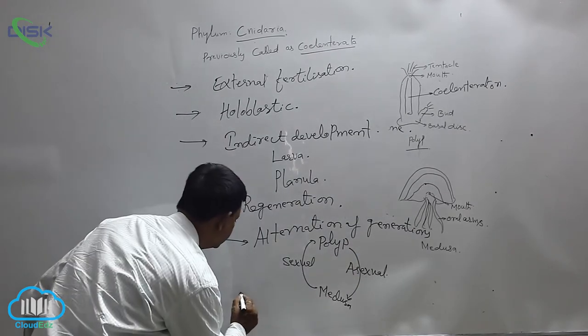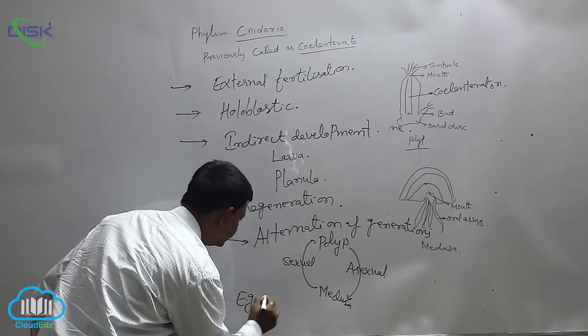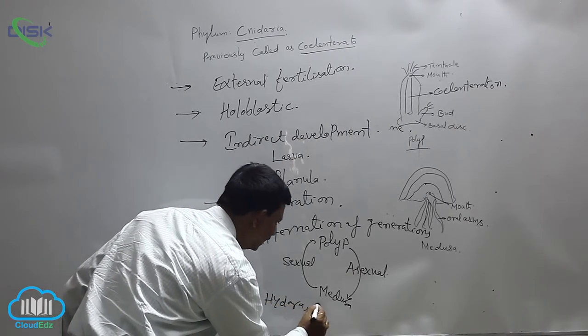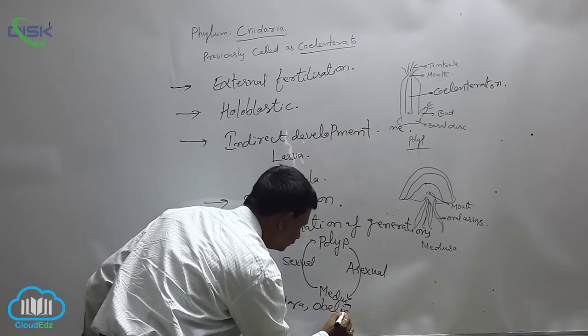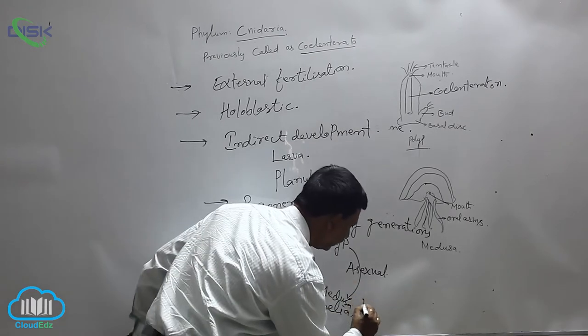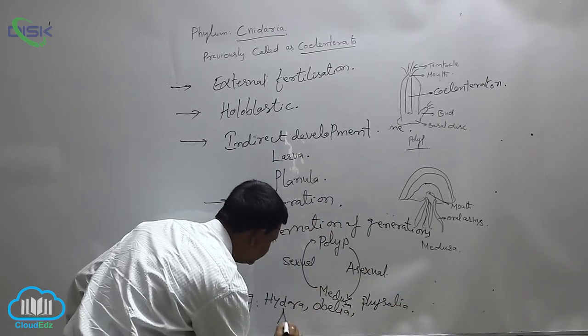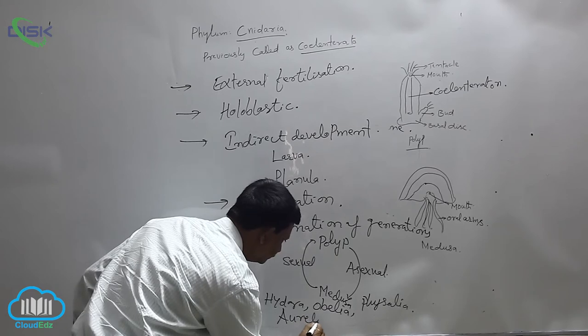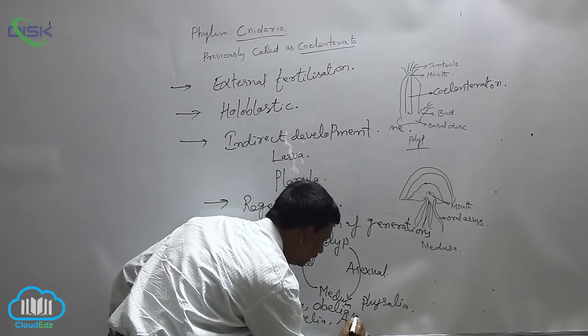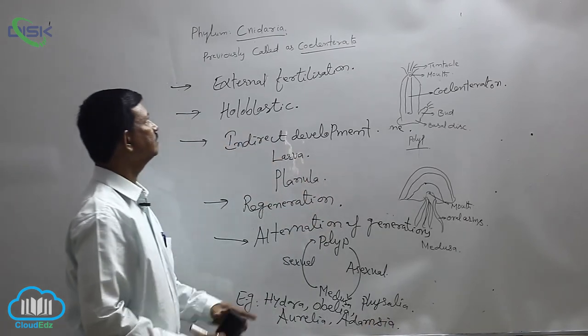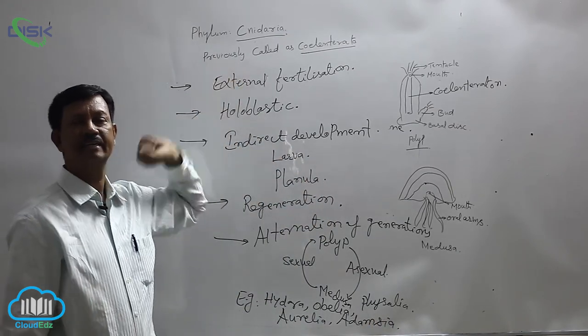Examples include Hydra, Obelia, Physalia, Aurelia, and Adamsia. These examples come under this phylum Cnidaria.